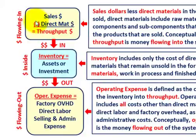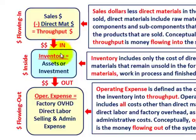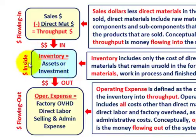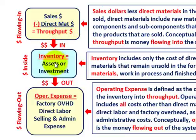Looking at throughput in these terms: you have your sales dollars coming in, and you subtract from it the direct materials — that equals your throughput dollars. That's the money flowing into this system. Those throughput dollars flow into the inventory, which really represents the assets or investments you have. Sales less direct materials equals the throughput monies flowing in.